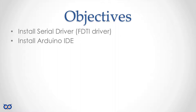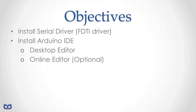Then we're going to install the IDE. The IDE — the Integrated Development Environment — is what we'll use to write code. We have two options: we can install the desktop editor, which I'll show you first, and then optionally the online editor. To use the online editor, we're not really installing it — we're installing plugins for your browser so your browser can talk to the serial driver. You still need the serial driver even if you plan to use the online editor, because that's what your operating system needs to talk to the device.